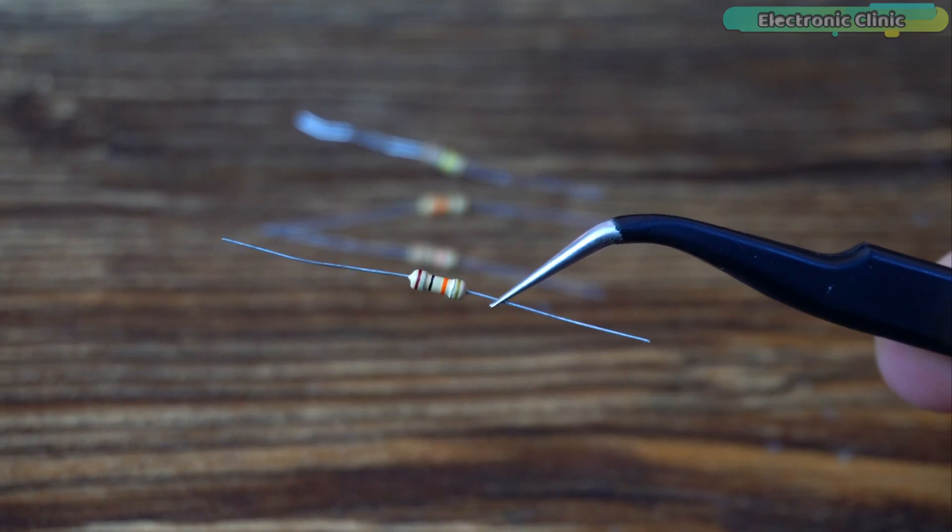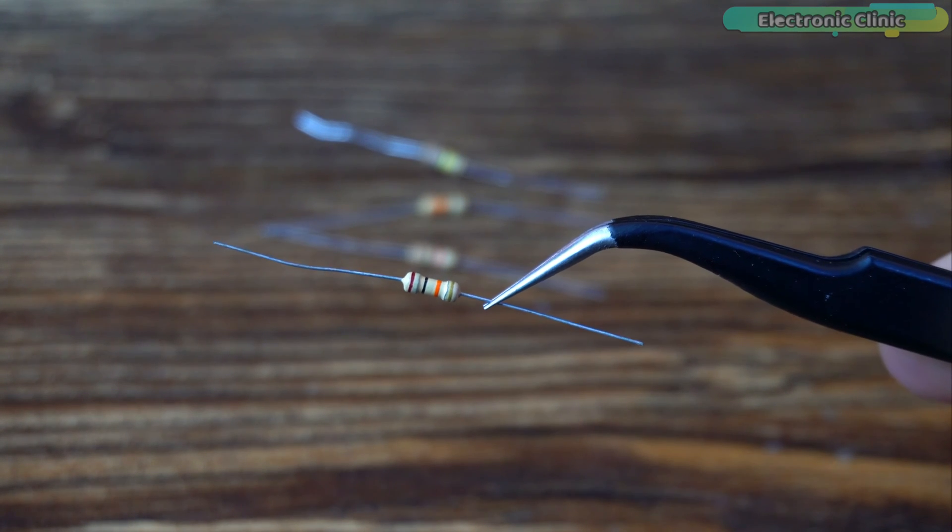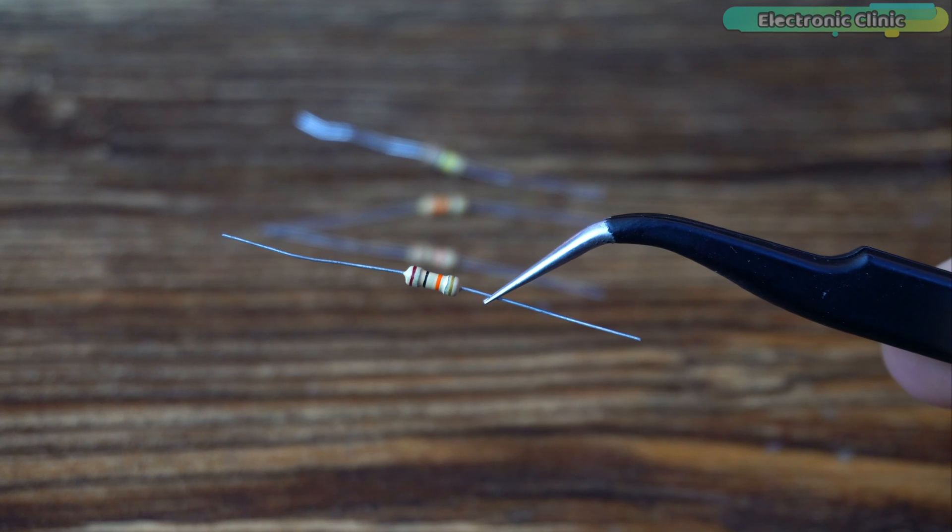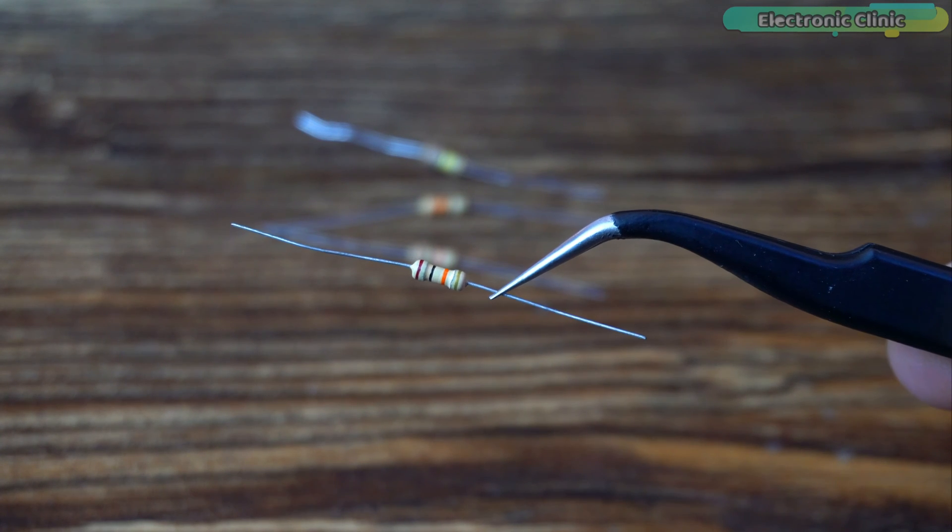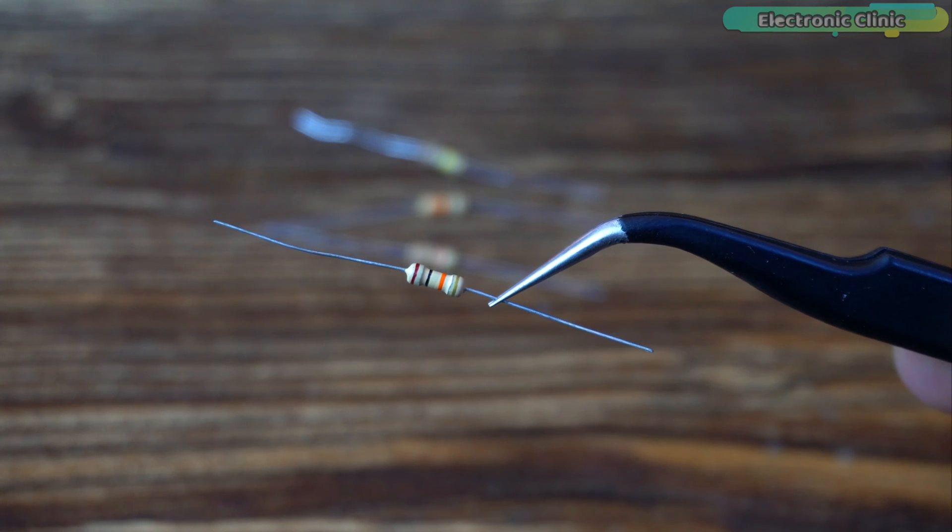As you can see this resistor has four color bands. At this stage the first question that may come to your mind is from which side should you read this resistor. So the answer is when reading the resistor you always need to keep the tolerance band on the right side.